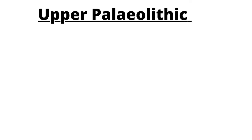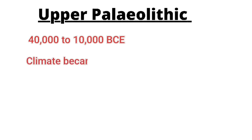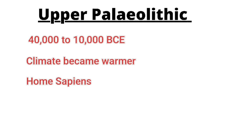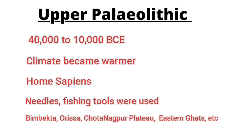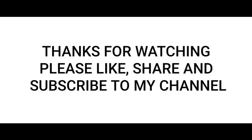The Upper Paleolithic age existed between 40,000 to 10,000 BC. This age marked the end and late stage of the ice age, and the climate became warmer and less humid. This was the evolution of Homo sapiens. Innovation in tools and technology includes needles and fishing tools. Major sites include Bhimbetka in south Bhopal, Odisha, Maharashtra, eastern Ghats, as well as major sites north of the Chotanagpur Plateau.